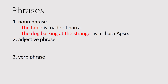For the noun phrase, it's composed of the main noun — also called the head word — plus the modifier. The modifier can come before the head word, like in the sentence 'The table is made of nara.' The article 'the' is the pre-modifier. And in the second sentence, you have a post-modifier: 'barking at the stranger' — a participial phrase that modifies the head word, 'the dog.'